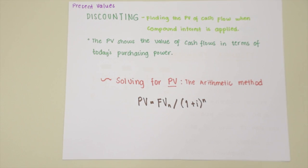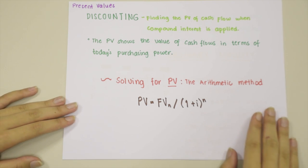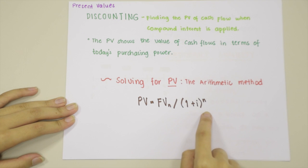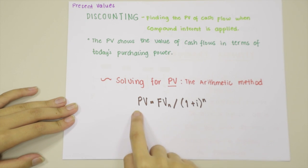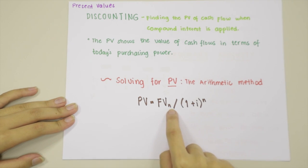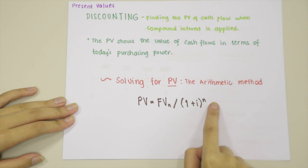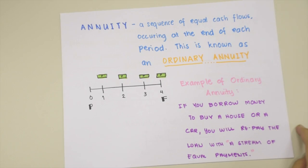In present values, we use the discounting concept, which is finding the present value of a cash flow when compound interest is applied. In solving it, we use the general formula: PV = FV_N / (1 + interest rate)^N.